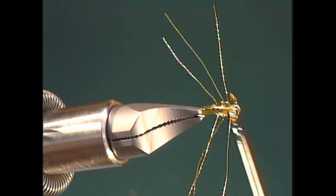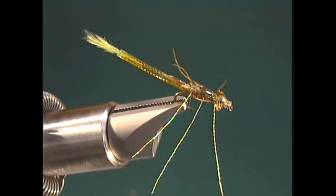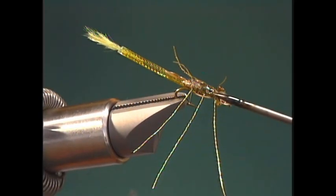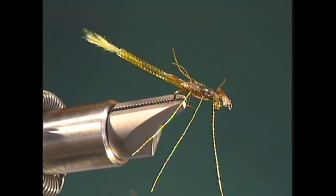By using the epoxy we're going to have a totally transparent thorax area. Then we'll do a little bit right around the eyes. That's what's going to form our head. We can wipe off our bodkin.